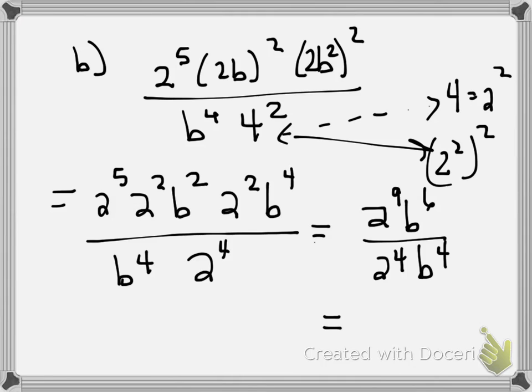So I can simplify those by using my rule of division, which means I subtract. If the base is the same, I can subtract the exponent, so that's 2 to the 5th, B squared. That's my answer.